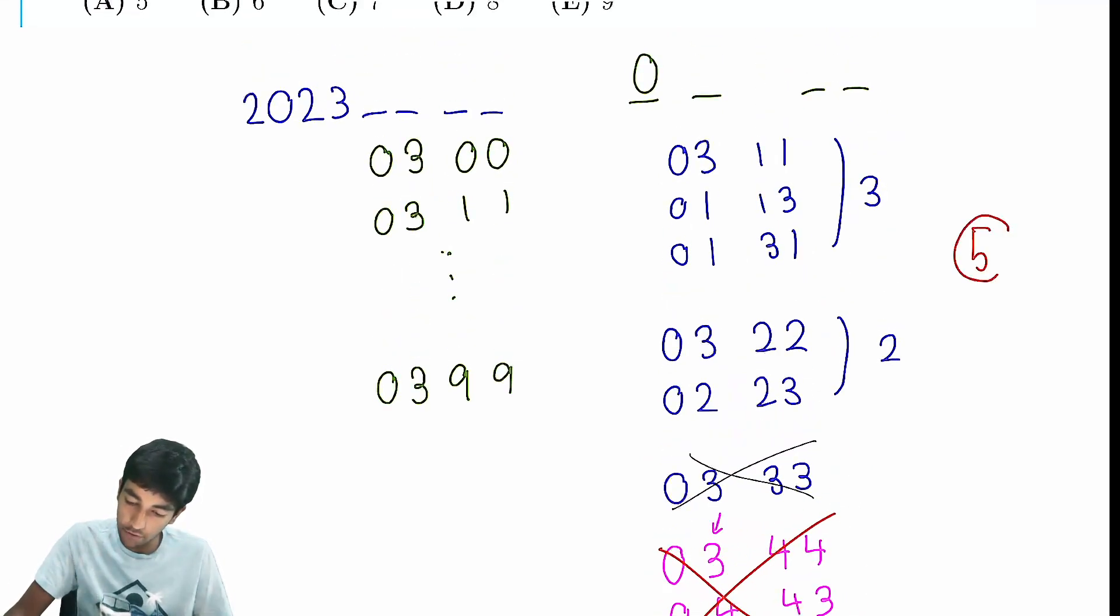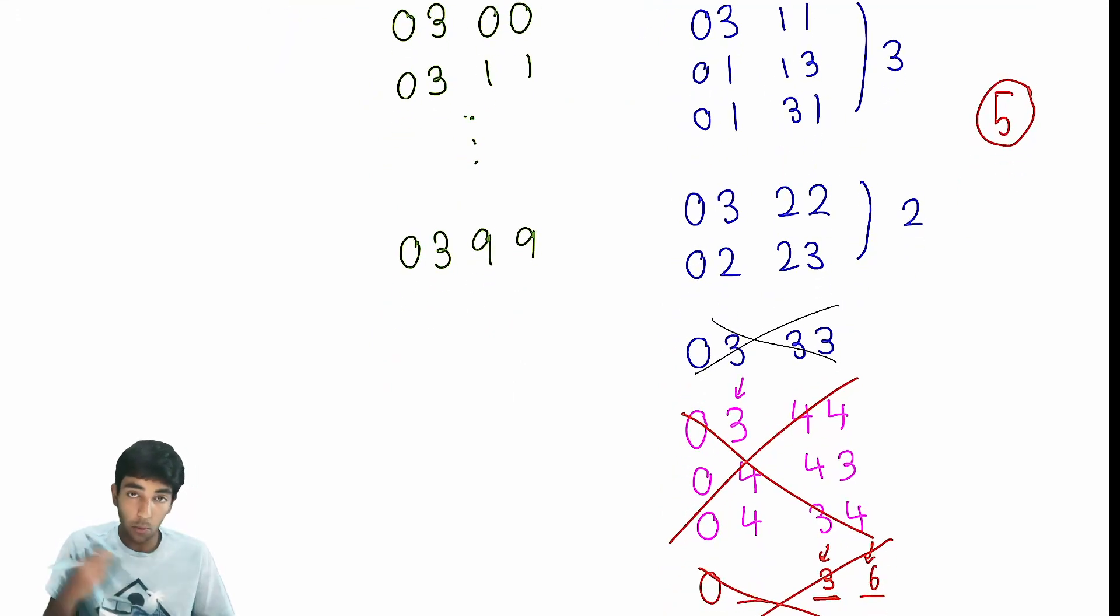Those are the only possibilities in this case. There's 5 possibilities if the first digit is a 0. Now, what if the first digit is a 1? Which is also possible. Then, we know the remaining 3 digits have to be 1, 3, and 0. And, now it's not too bad. We can just try all the possibilities.